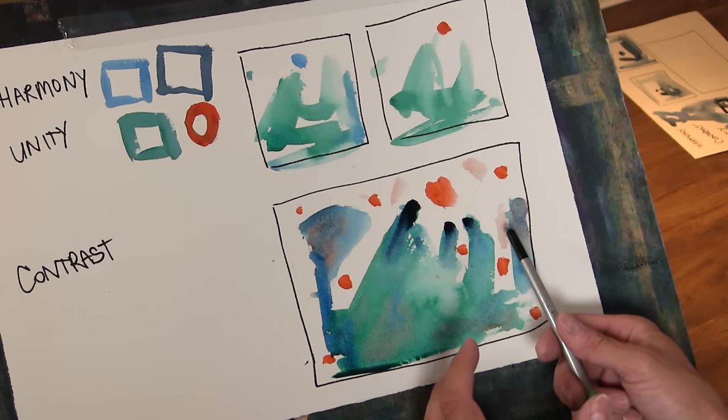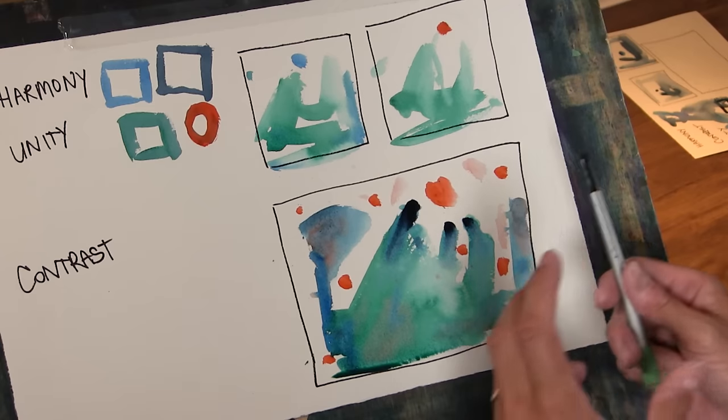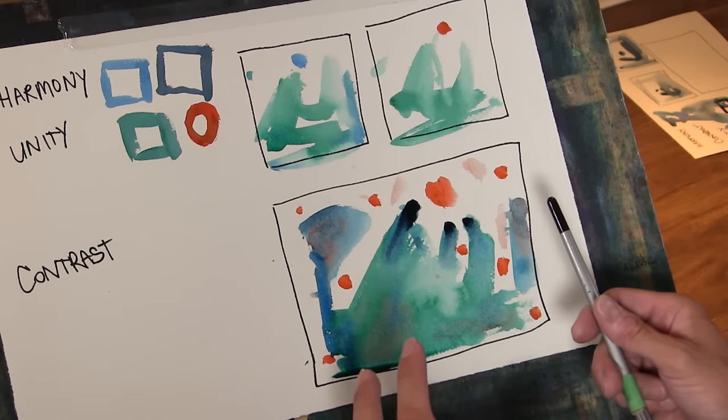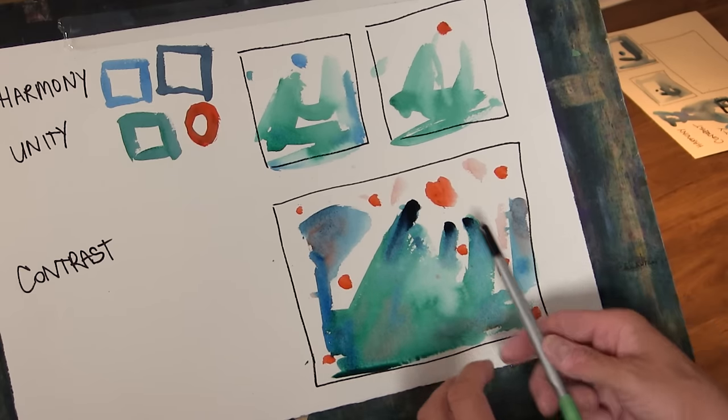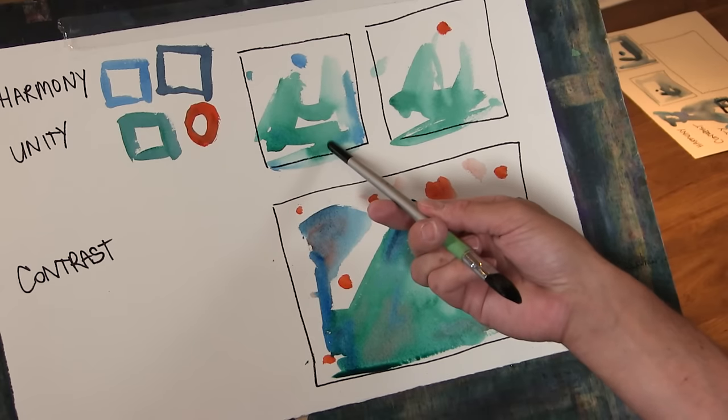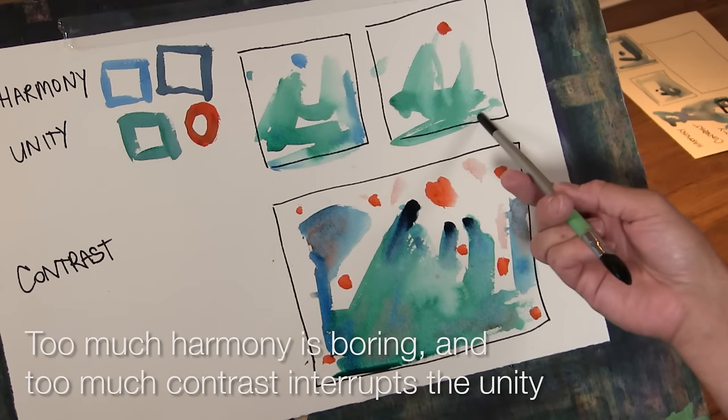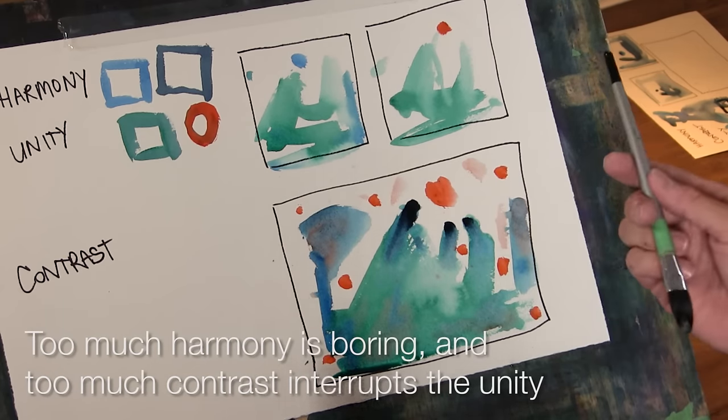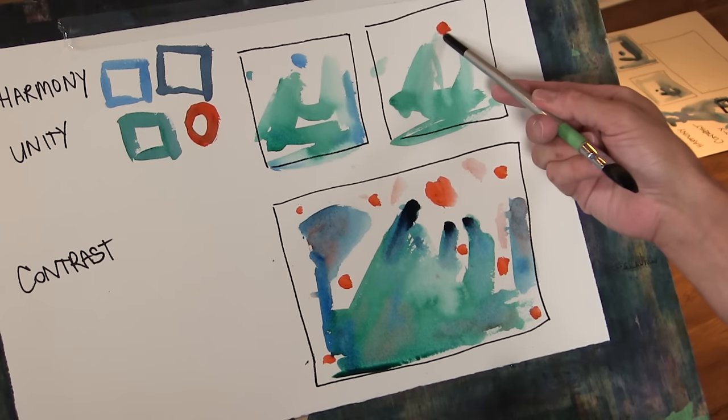And it's a tight balancing act of how much contrast we need to give us the excitement we want in a certain area of the painting balanced against the unity of the painting, because if we have too much harmony we have no interest or excitement. If we have too much contrast we interrupt the unity of the painting and it feels like it doesn't belong.